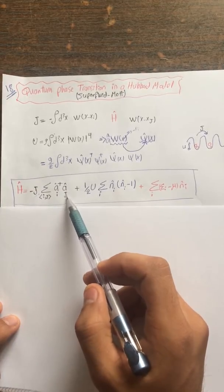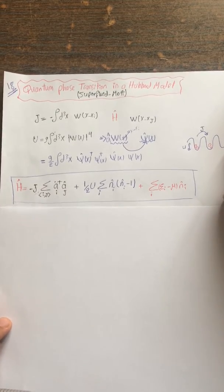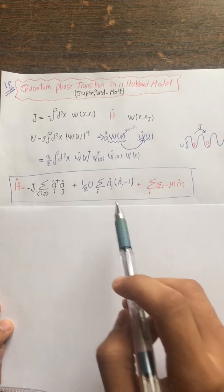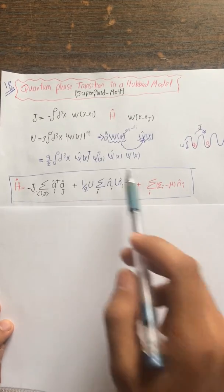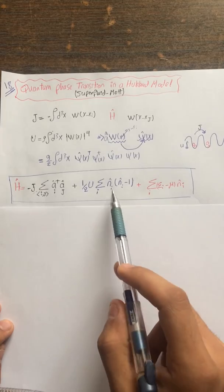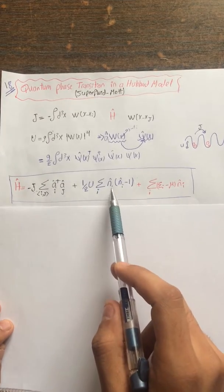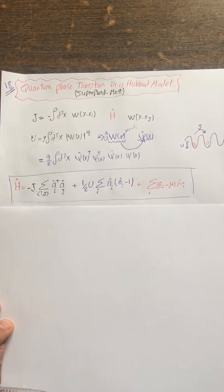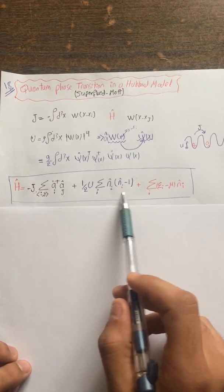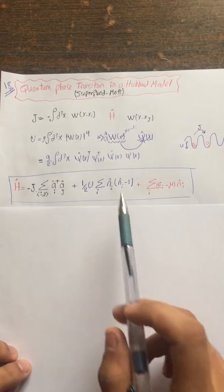You destroy at site j and create at site i at the optical lattice sites. For the on-site interaction term, using the commutator relations for field operators, you can find the number operator. Starting from a-dagger, a-dagger, a for example, and applying the correct commutation and anti-commutation relations, you can rewrite the whole term and you get U over 2 for the interaction.